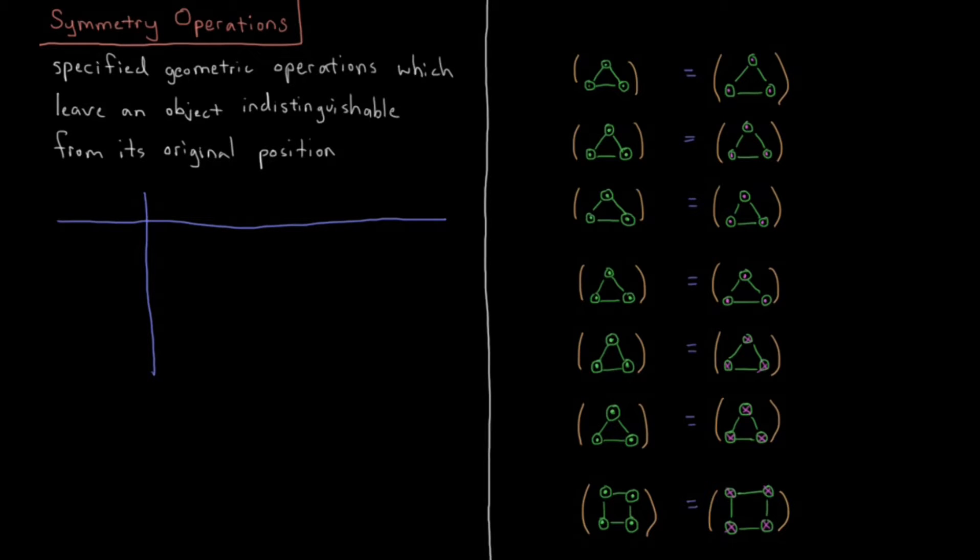Our first concept in symmetry and group theory is the concept of symmetry operations. This is going to be a specified geometric operation which leaves an object indistinguishable from its original position.